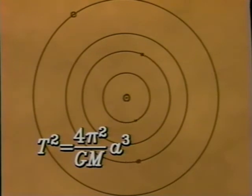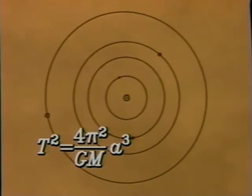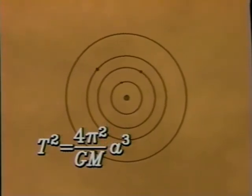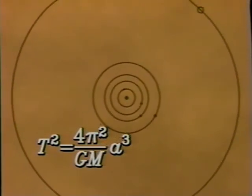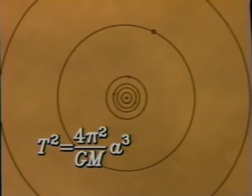His third law came ten years later. It states that the square of the period of a planet is proportional to the cube of the length of the semi-major axis, and it reveals a connection between the motions of different planets.